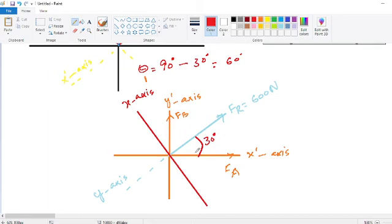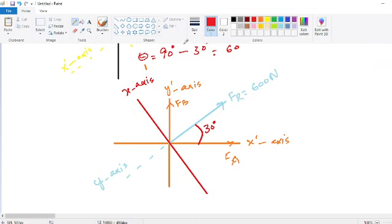Now you can see that this F of A and F of B are both rectangular components of this F of R. Now we can simplify their magnitude by using our basic formulas.